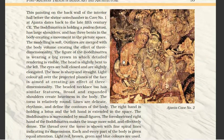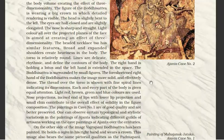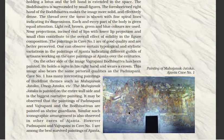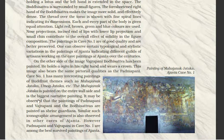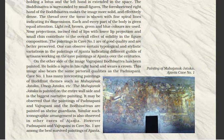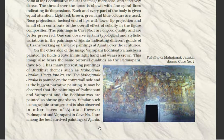Here you can see the beautiful painting in Ajanta cave number 2. Vajrapani Bodhisattva holds a Vajra in his right hand and wears a crown, and this image bears the same pictorial quality as the Padampani. Cave number 1 has many interesting paintings of the Buddhist theme such as Mahajanaka Jataka, Umang Jataka, etc. The Mahajanaka Jataka is painted on the entire wall side and is the biggest narrative painting. The paintings of Padampani and Vajrapani Bodhisattvas are painted as shrine guardians. Padampani and Vajrapani in cave number 1 are among the best surviving paintings of Ajanta.